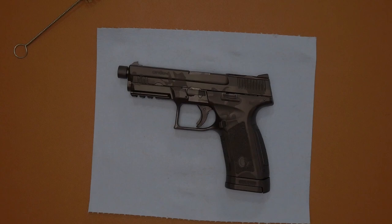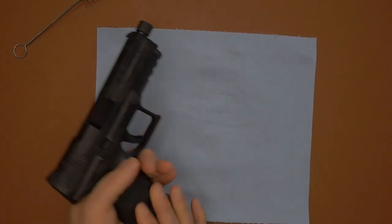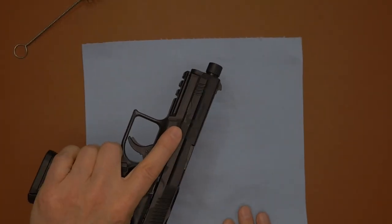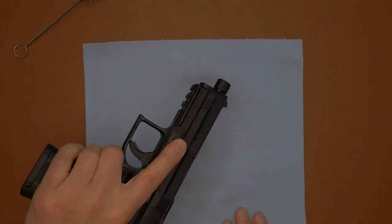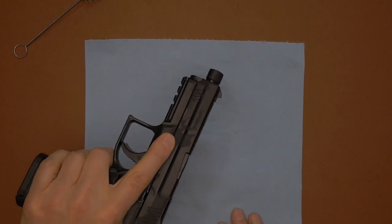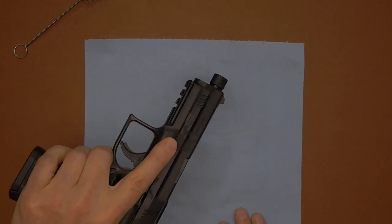Of course, we treat every firearm as though they're loaded. We keep the finger off the trigger until we're ready to fire. We do not point a firearm at anyone or anything that we do not want to destroy or kill, and that we are conscious or aware of what's behind those targets. So those are the four safety rules that we go through.